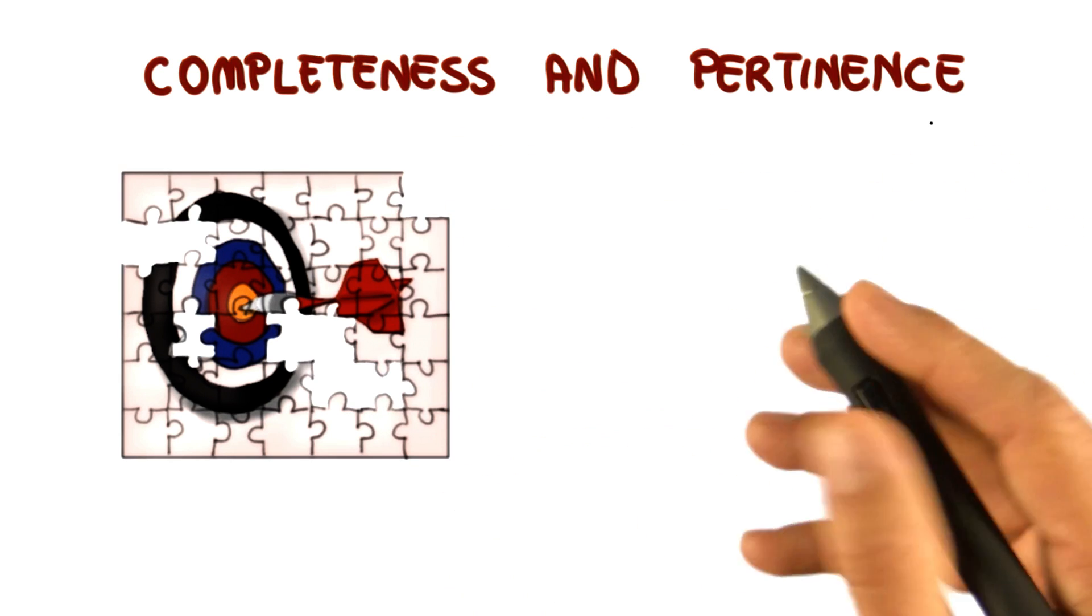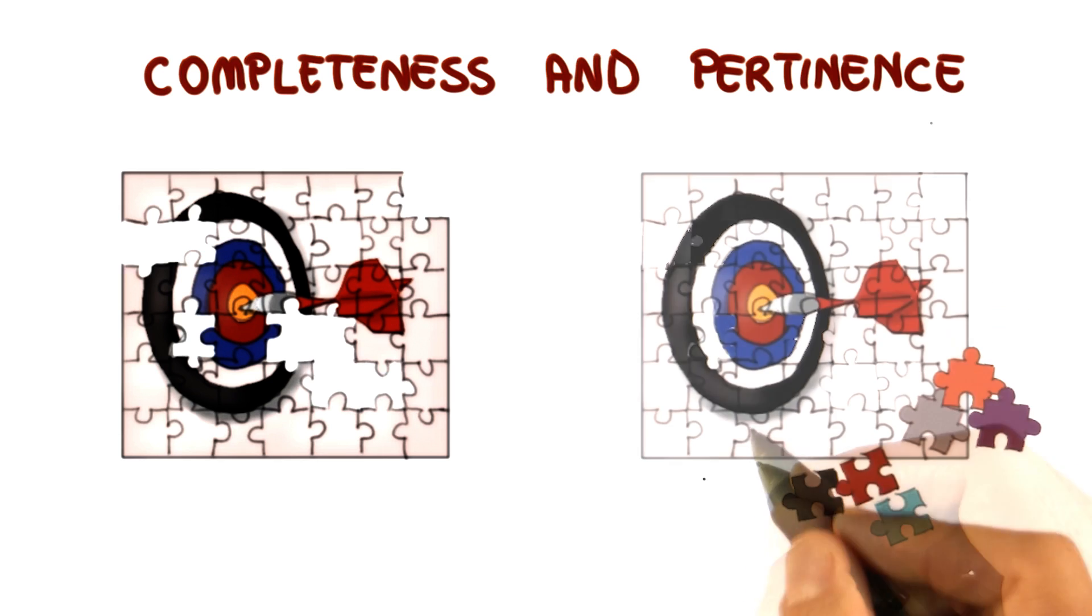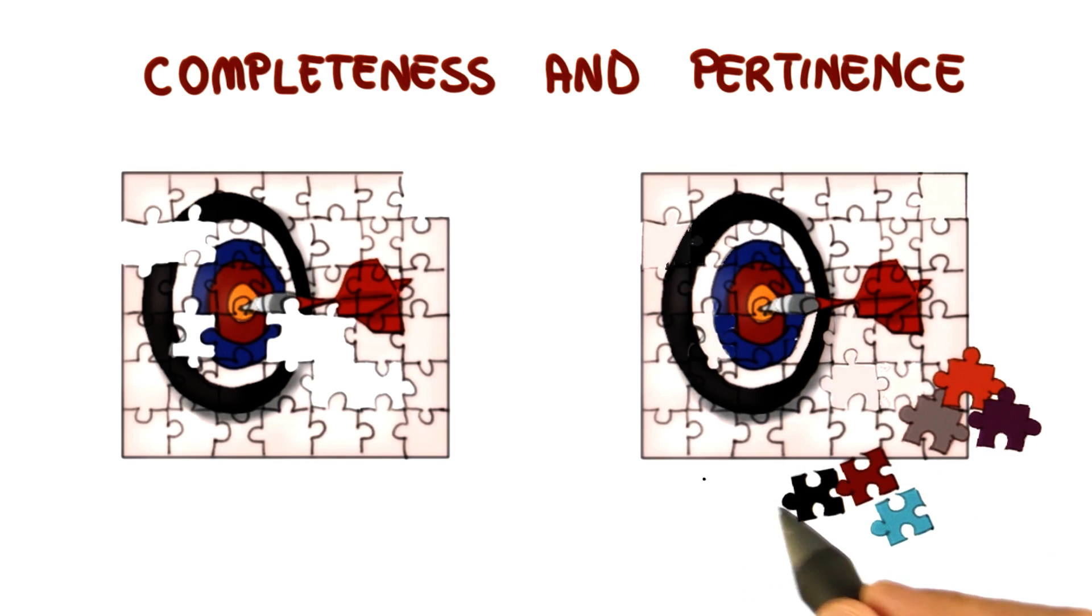Pertinence, conversely, has to do with the relevance of the requirements. To avoid completeness problems, developers often end up collecting a lot of irrelevant, when not conflicting, requirements.